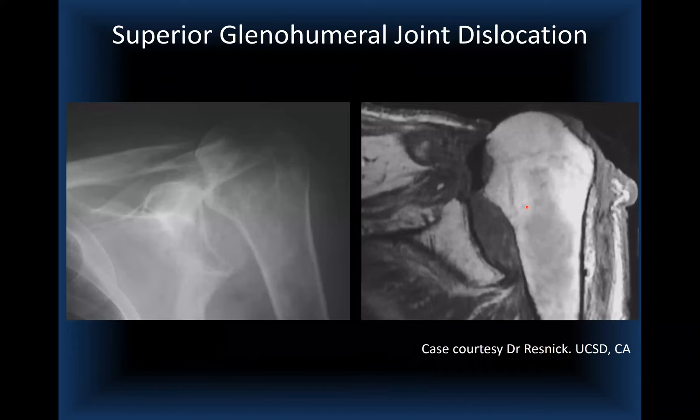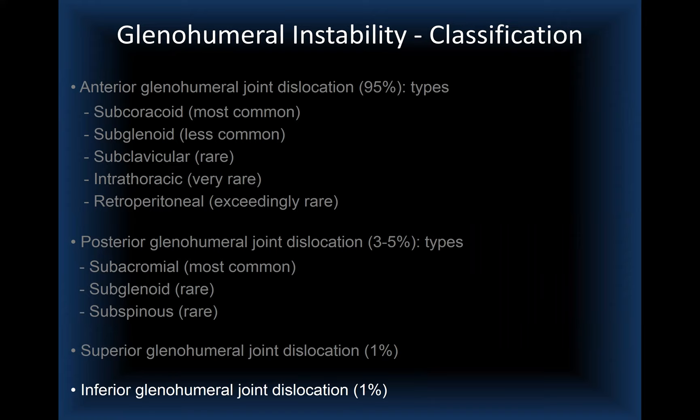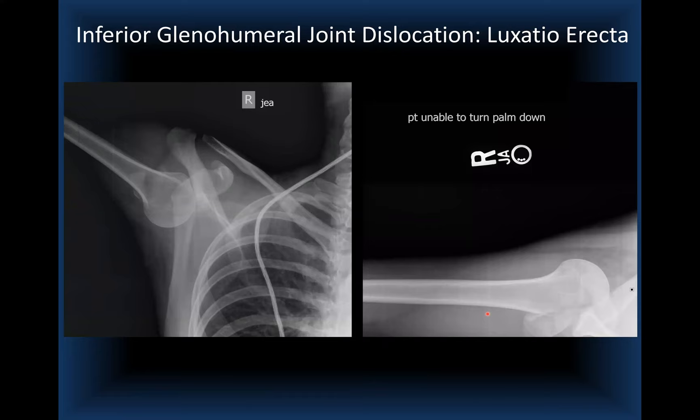Superior glenohumeral dislocations are quite rare. A case courtesy of Dr. Resnick shows x-ray, T1, and T2 images of a post-surgical superior dislocation. Inferior glenohumeral dislocation, the so-called luxatio erecta, is also very unusual — probably slightly more common than superior dislocation, but still quite uncommon.